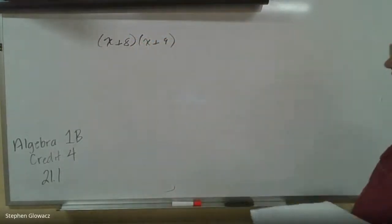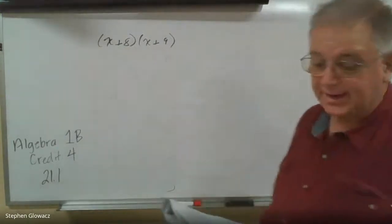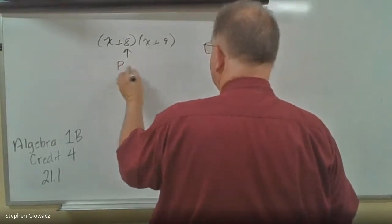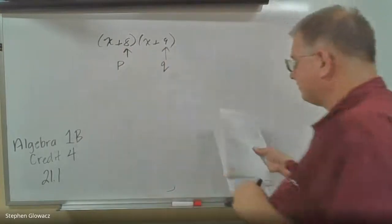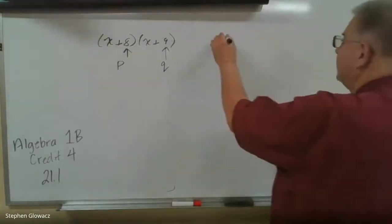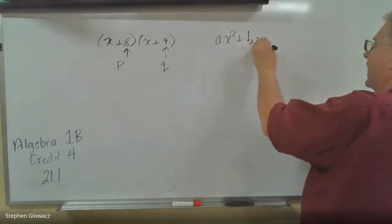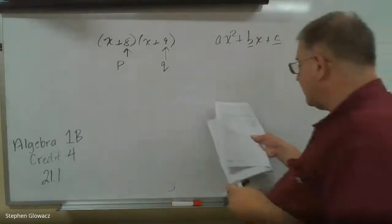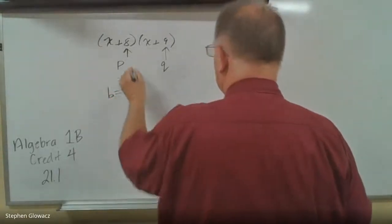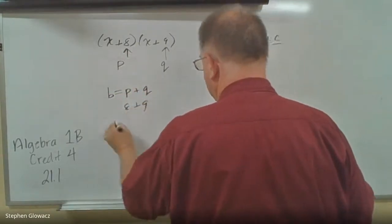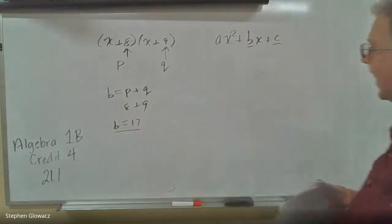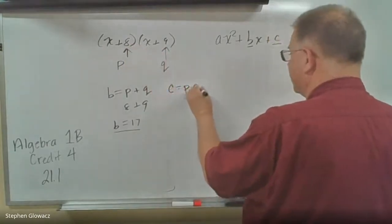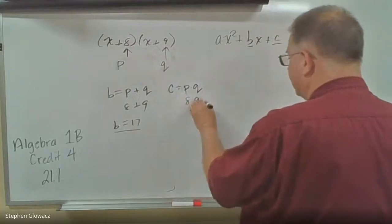We've got two binomial factors: x plus 8 and x plus 9. We're going to identify p and q — the number in the first factor is p, and the number in the second factor is q. We're factoring in the form ax squared plus bx plus c, and we're going to find the values of b and c. For b, we add p plus q: 8 plus 9 is 17. For c, we multiply p and q: 8 times 9 is 72.